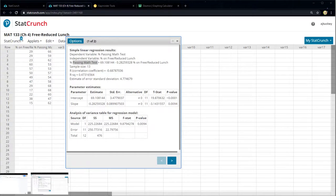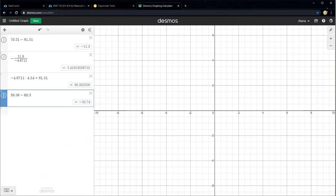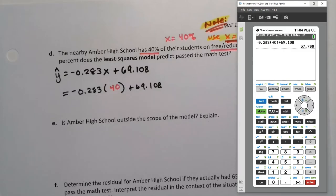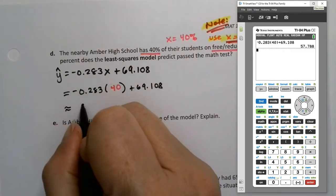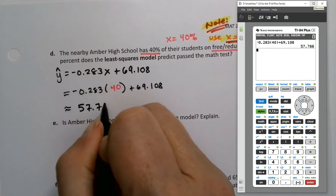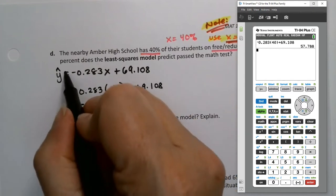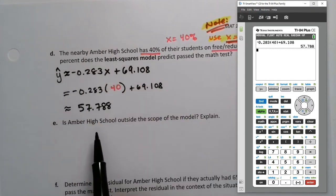Plus 69.108, enter. And there you have it. If you don't have that calculator, you can of course use decimals. So it would be negative 0.283 times 40 plus 69.108. I could use parentheses or I could use times. Either way, I'm going to get 57.788. And it's of course an approximation because the whole thing is an approximation. That's kind of how it works.